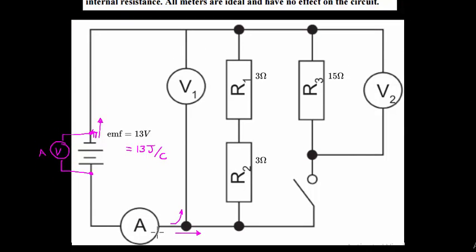Looking at this diagram: electrons flow from negative to positive, current flows from positive to negative. The current comes through, passes through our ammeter, and then can split. This voltmeter here — notice what it's measuring: it measures the potential difference between two specific points in the circuit.